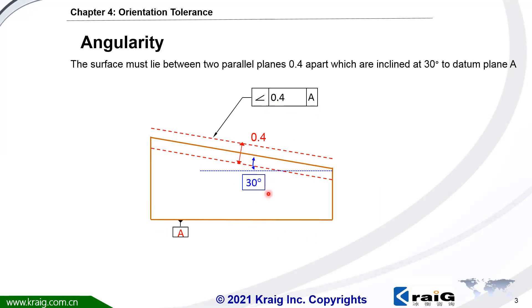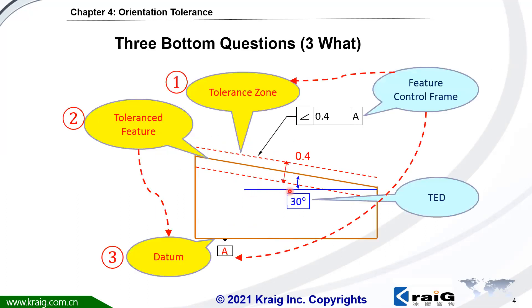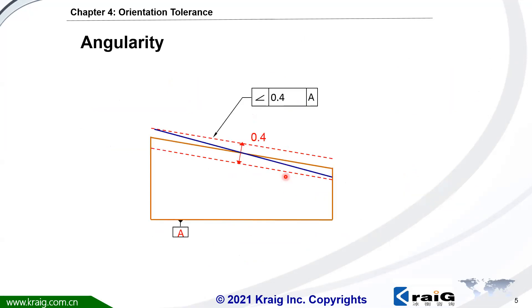Also, as we said, TD could be dimensional or could be angle. Angularity controls two things. First, it's the rotation error of this surface.